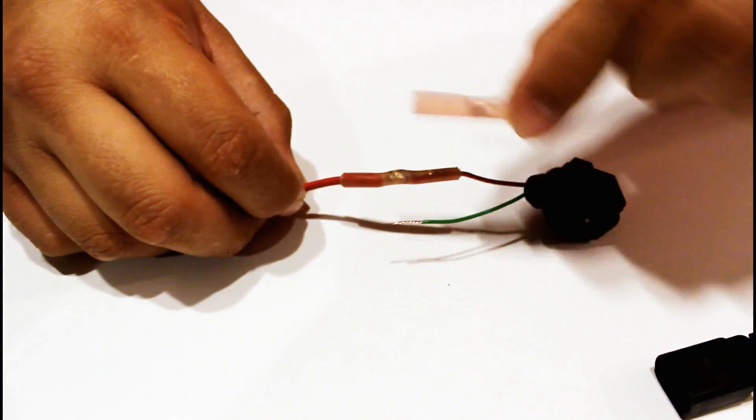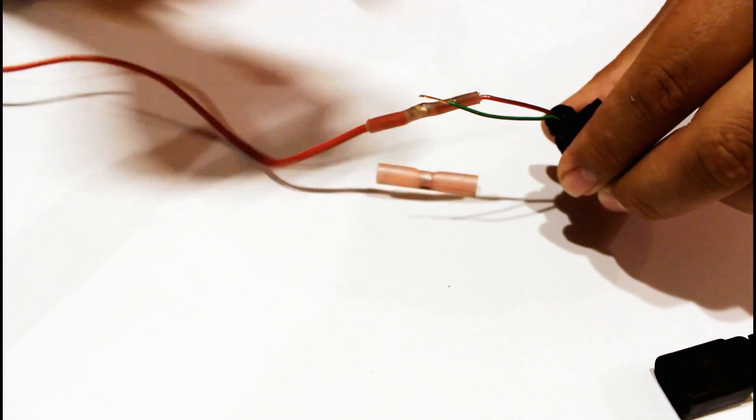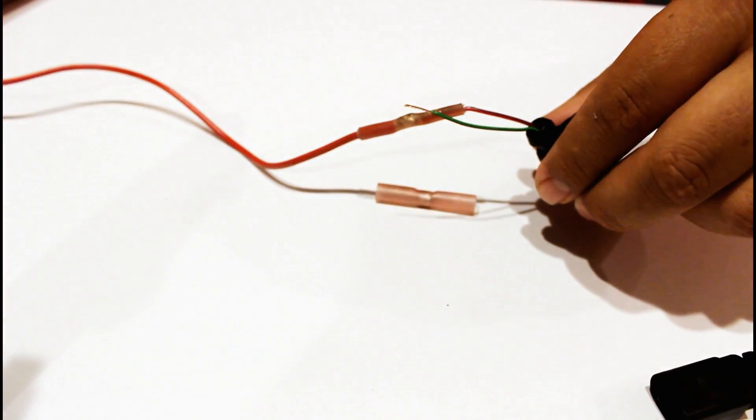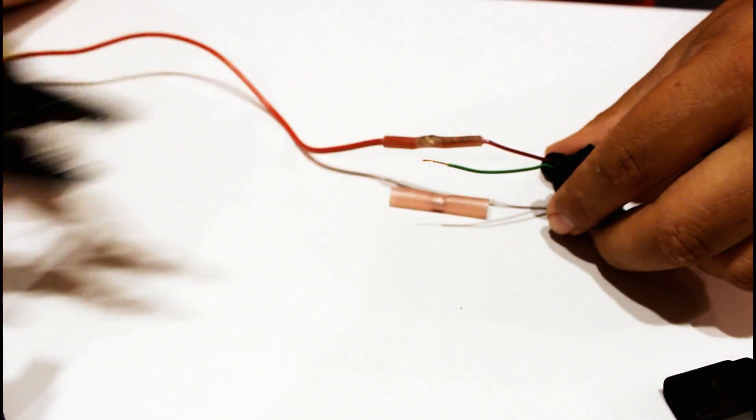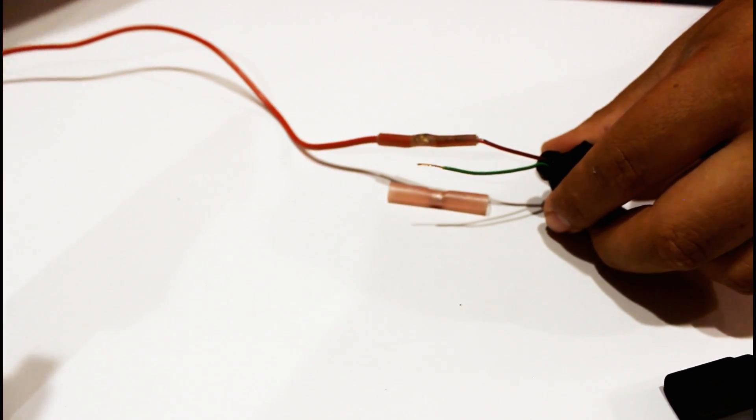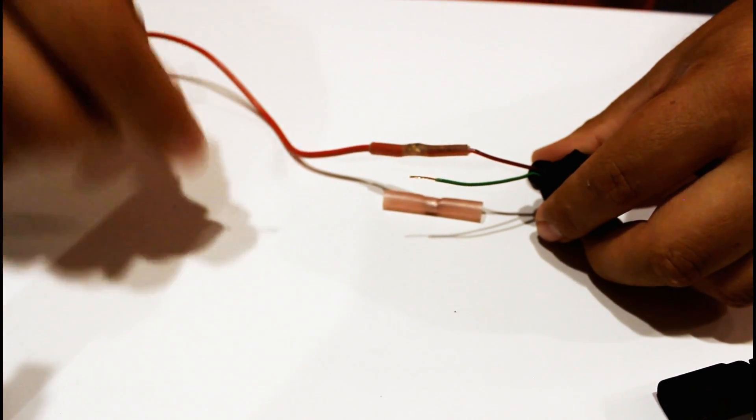You need a soldering sleeve like this. We're going to use a torch, and we've already prepped our wires by using some strippers and stripping off the coating on the wire, the sheath.